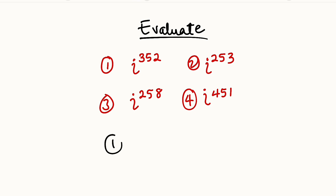Alright, let us start with i to the power of 352, i to the power of 253, i to the power of 258, and i to the power of 451. The first thing we need to check is whether the power is a multiple of 4, and we can find that by dividing the power by 4.